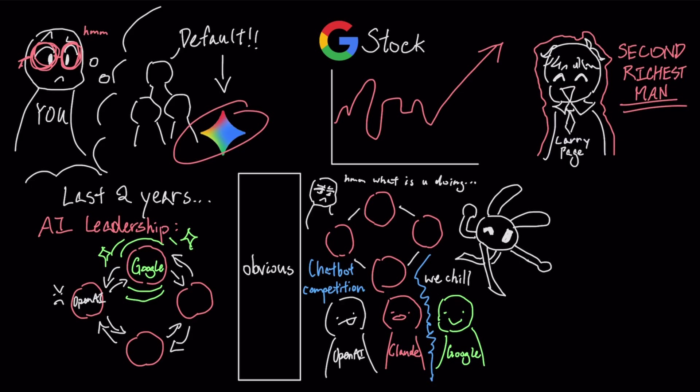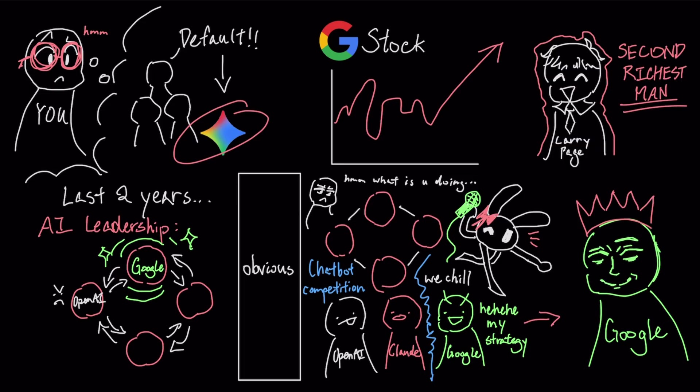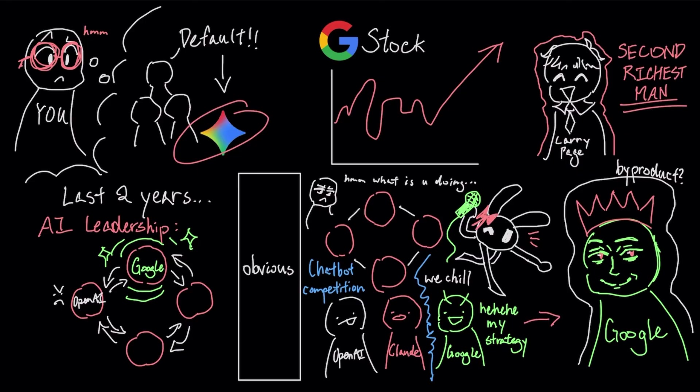In this video, I want to show you the grand strategy Google has been playing all along, and we will see if they are about to become the undisputed king of the AI race, simply as a byproduct of the empire they have already built.